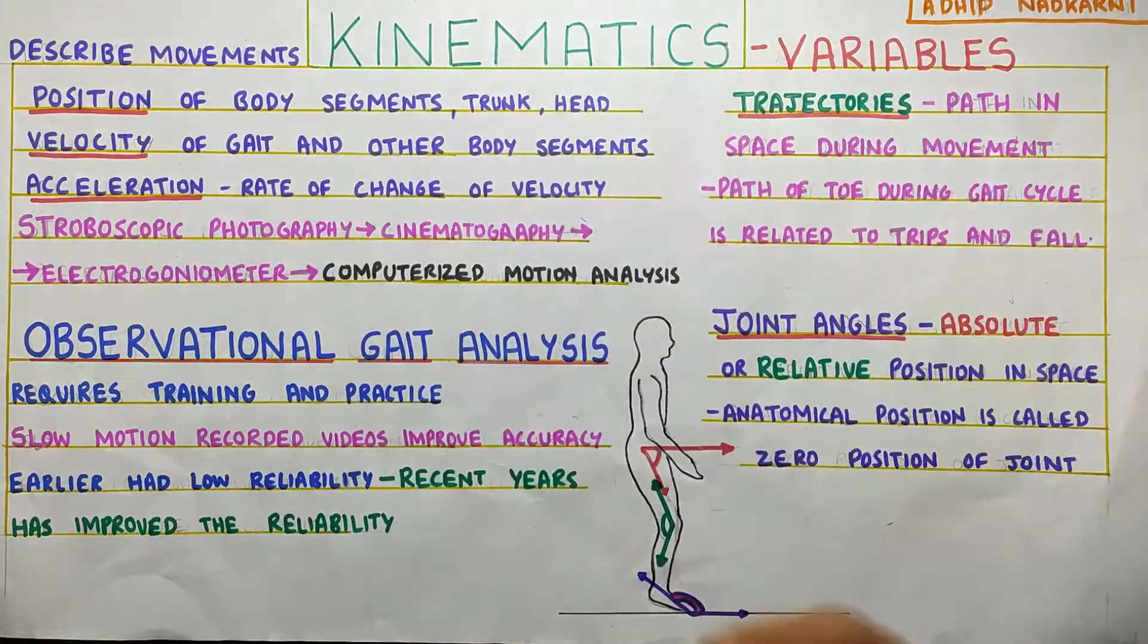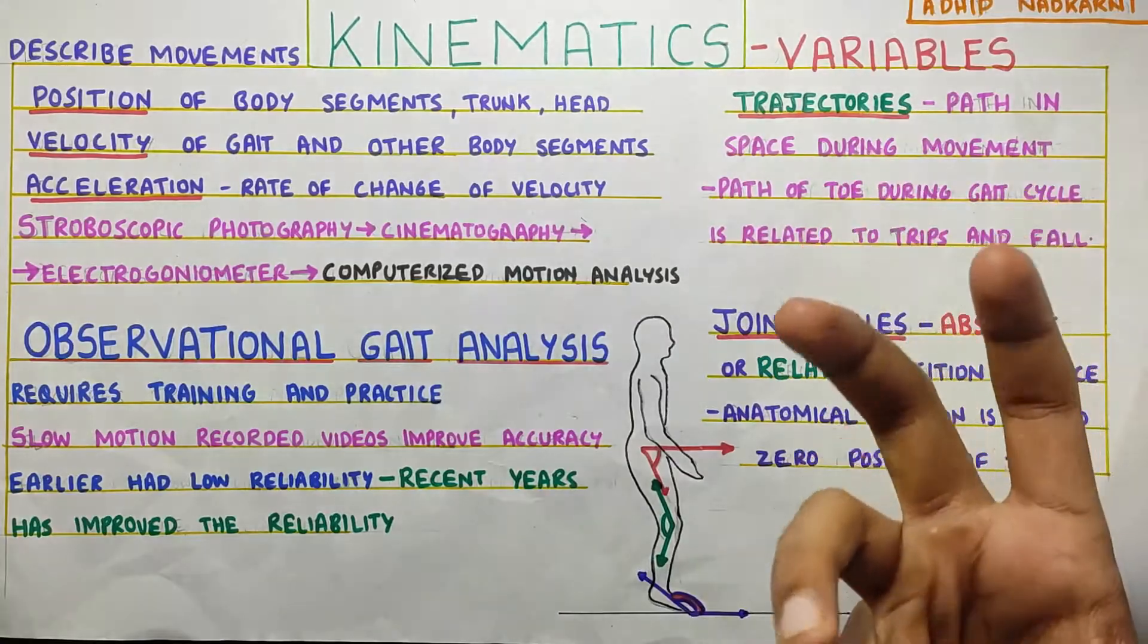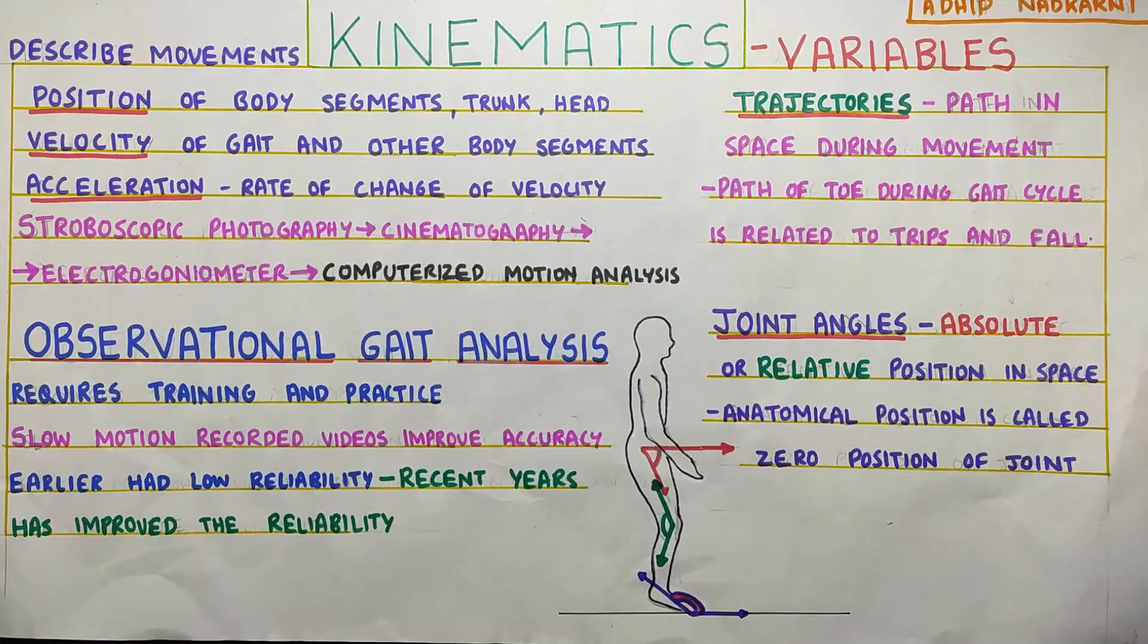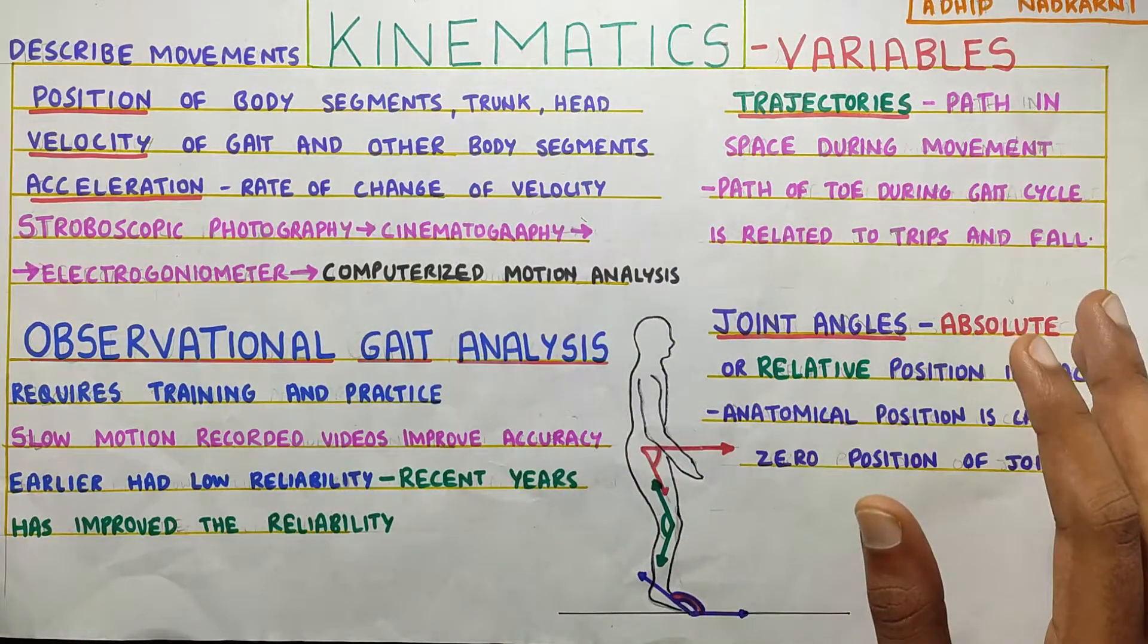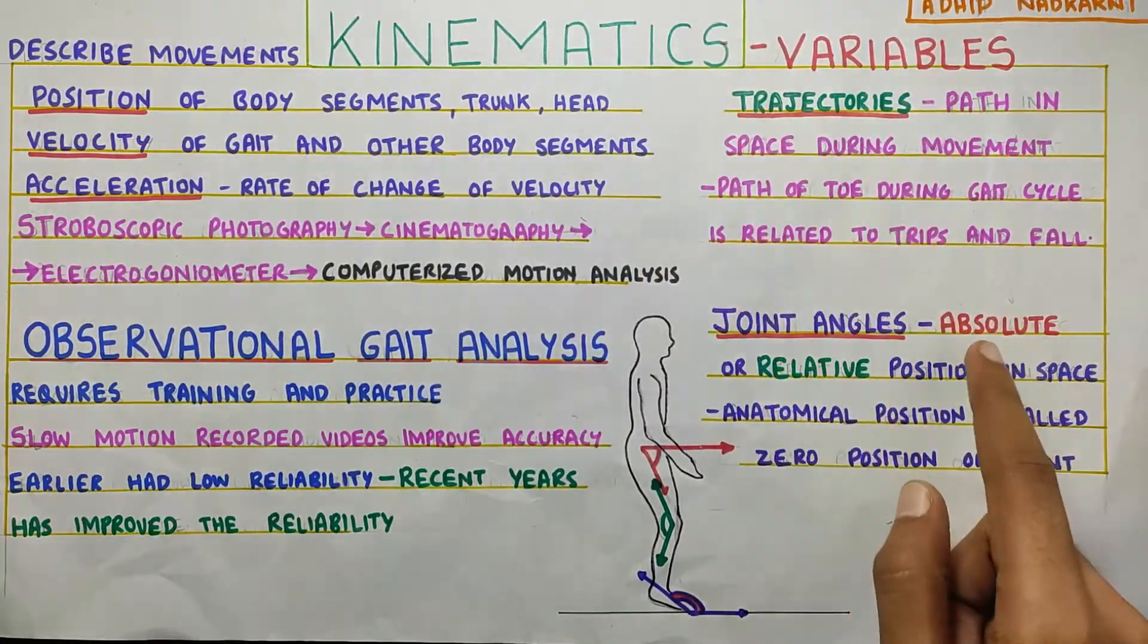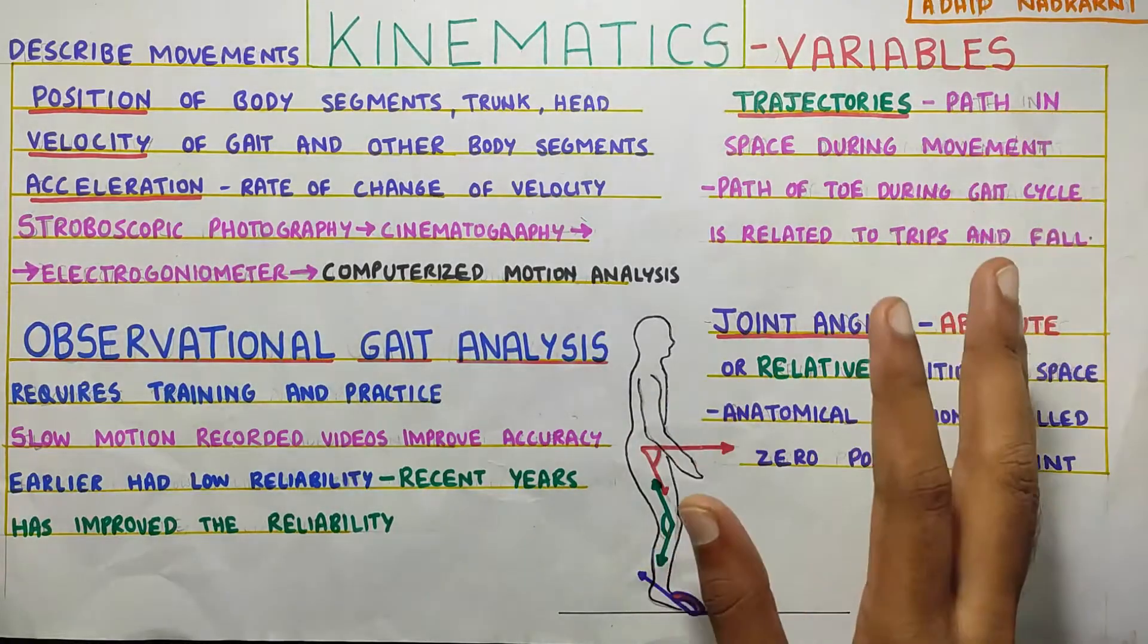And this is the importance of this video - basically the kinematics variables. These variables are used to analyze the gait in different ways. So although it looks like a lot of information, we are just going to cover the key points over here. That is the position, velocity, acceleration, trajectory and joint angles.